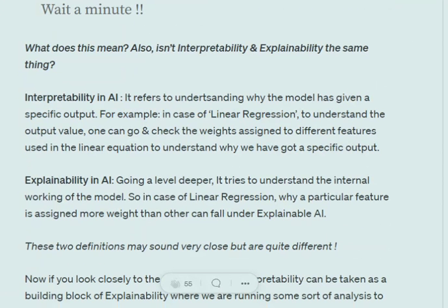Now in case of explainable AI, we go a level deeper. In interpretable AI, we don't wish to know why different weights are assigned to different features, why some features have been assigned higher weights and why some features have assigned lower weights. In explainable AI, we try to find out solutions for why the model is assigning higher weights to some features and lower weights to other features.